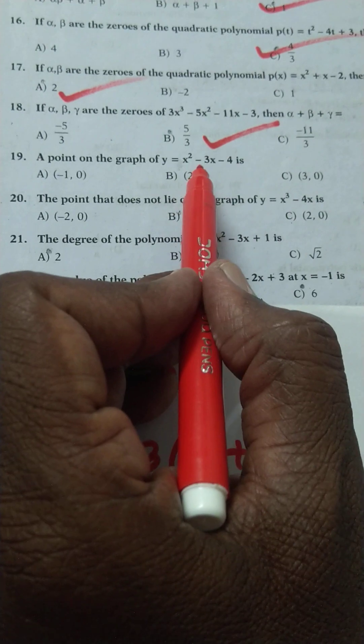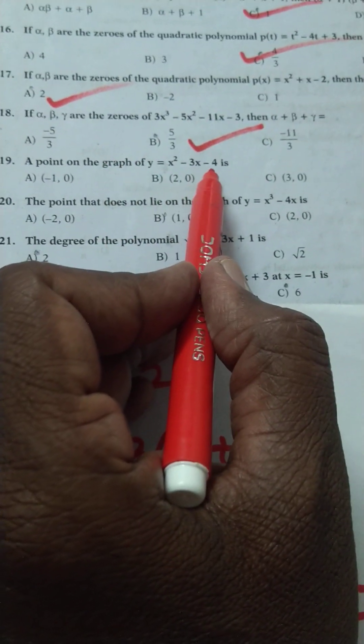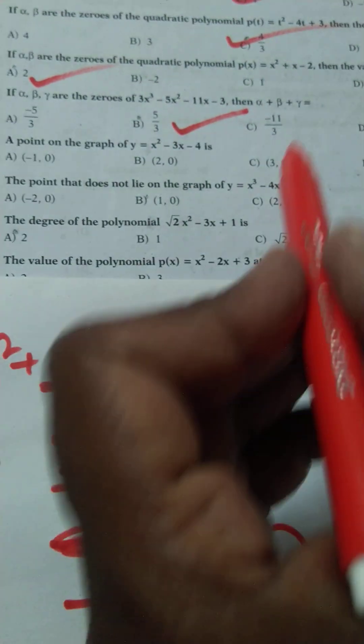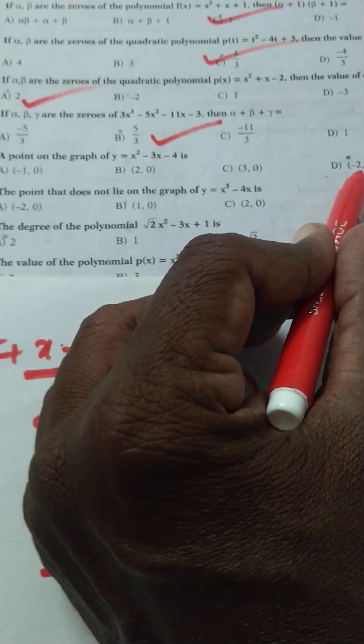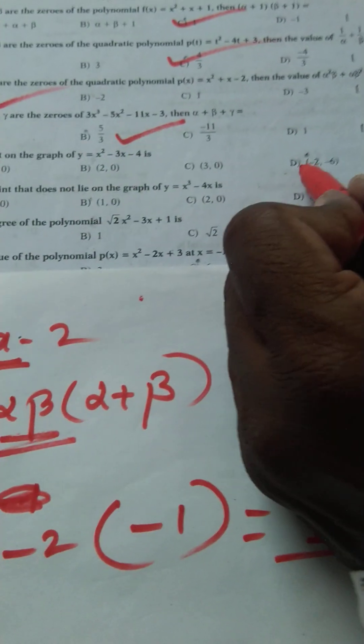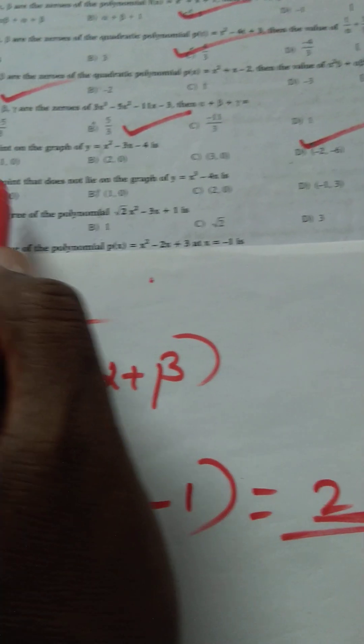The point on the graph y = x² − 3x − 4: you have to put the point values in this equation. Option D is the right option.